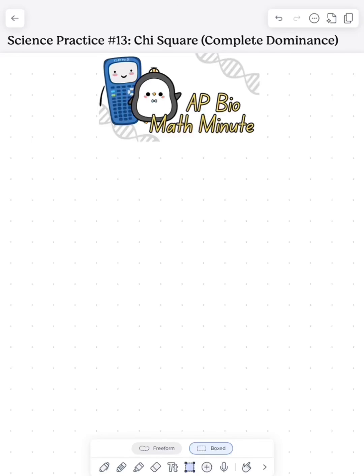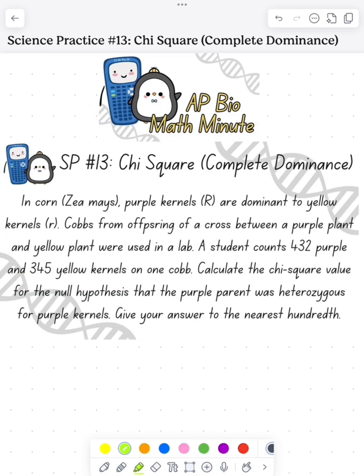What's up AP Bio Pen's? Today we're going to do an AP Bio Math Minute looking at chi-square. Purple kernels are dominant to yellow kernels and we want to cross a purple and a yellow plant together.